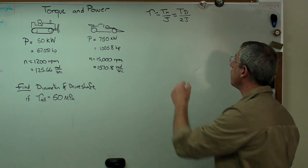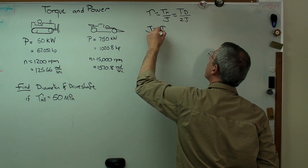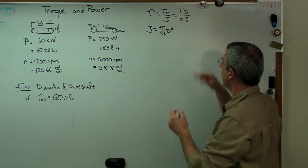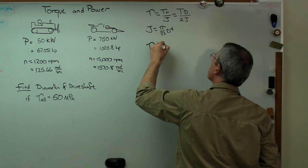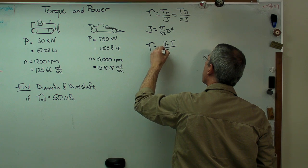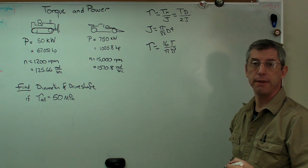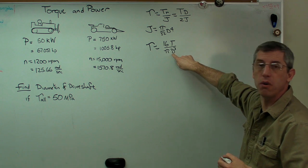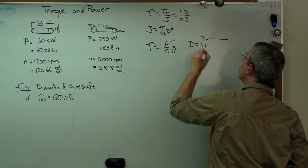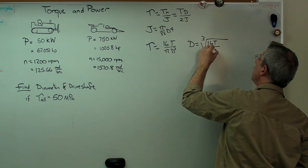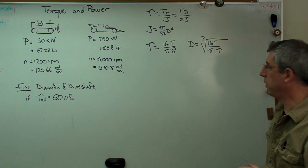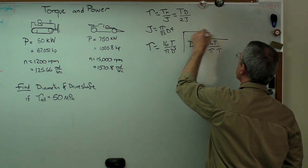For a solid shaft, J equals pi over 32 D to the fourth. If you substitute that in, you get tau equals 16T over pi D cubed. That's the governing equation. The thing we don't know is D, so let's solve for that. D is the third root of 16T over pi times tau. This is the expression we're going to use.